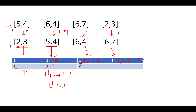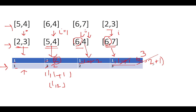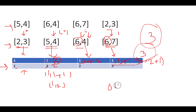Continuing: comparing [5,4] and [6,7] — 6>5 and 7>4, condition satisfied. dp value is 2, so 2+1=3, updated to 3. Then j points to [6,4]: 6 equals 6 — condition not satisfied, reject. The maximum value across the dp array is 3, so the answer is 3. Time complexity is O(n²) and space complexity is O(n), where n is the number of envelopes.